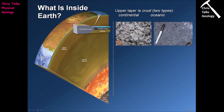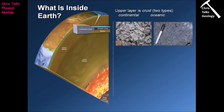Continental crust, as the name suggests, underlies the continents; oceanic crust underlies the oceans. In terms of thickness, continental crust is considerably thicker than oceanic crust — anywhere between about 20 and 70 kilometres, typically about 30 or 40 kilometres thick. Oceanic crust has a thickness of about 7 or 8 kilometres, much much thinner. This difference in thickness and density will affect how they sit relative to each other, producing topographic highs and lows.